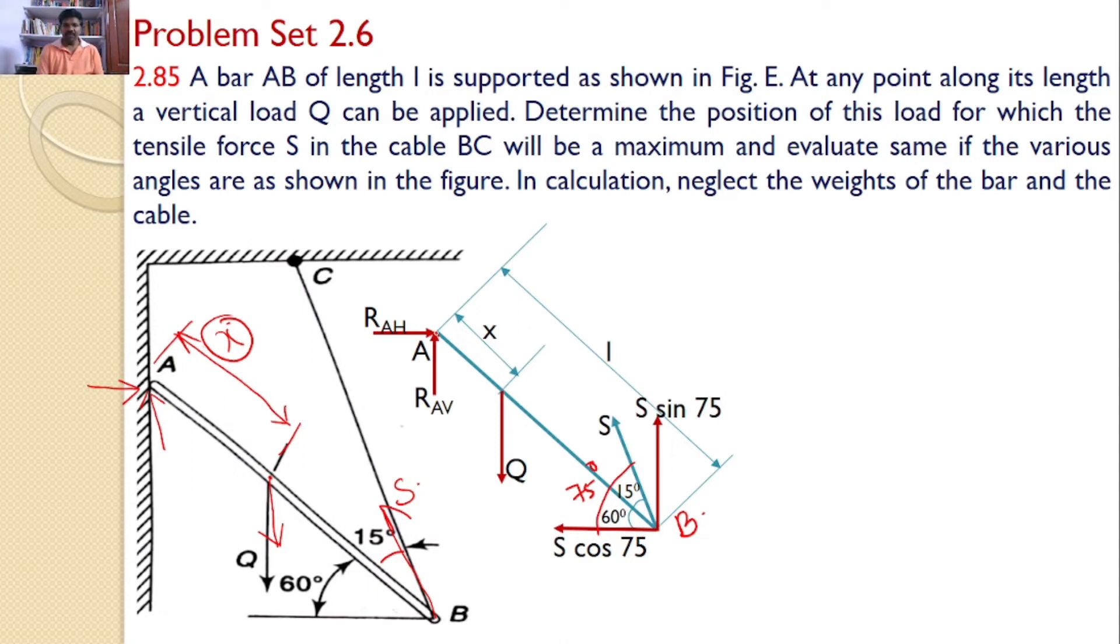So for that I will take the moments about point A. In this case RAH and RAV are passing through the point A will not introduce any moment. So Q will introduce a moment like this. S cos 75 will also introduce the moment in the same direction but S sin 75 will introduce the moment in the opposite direction.